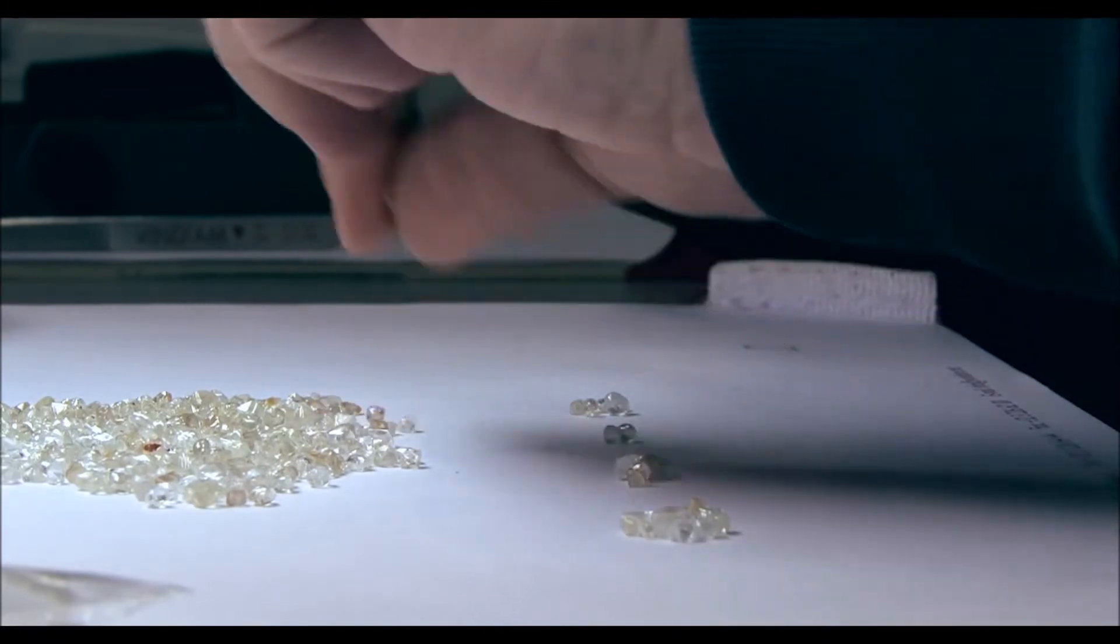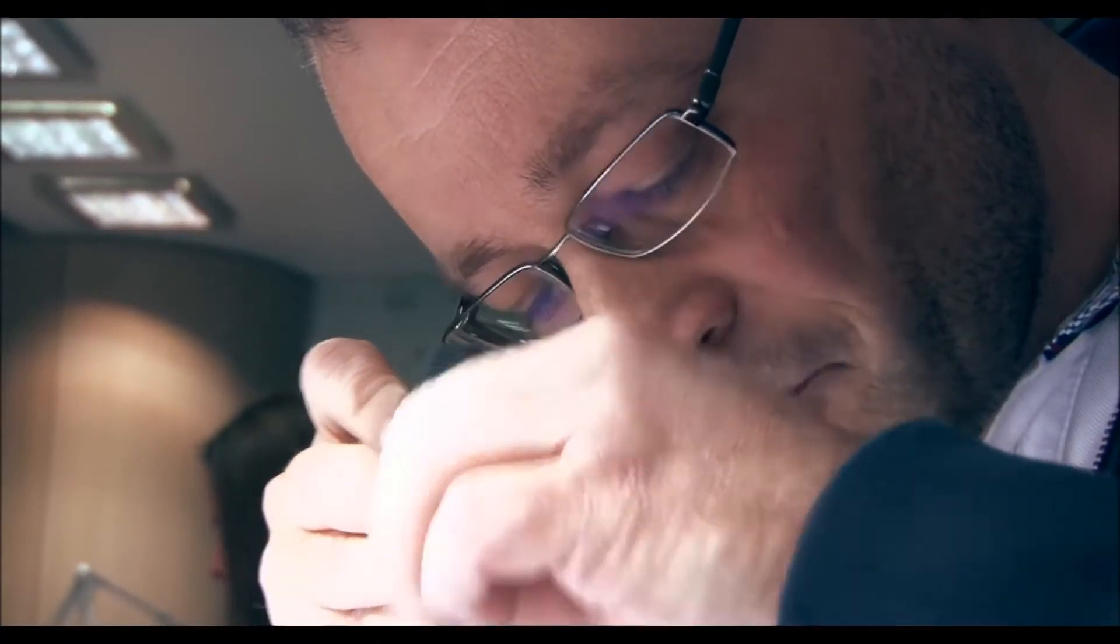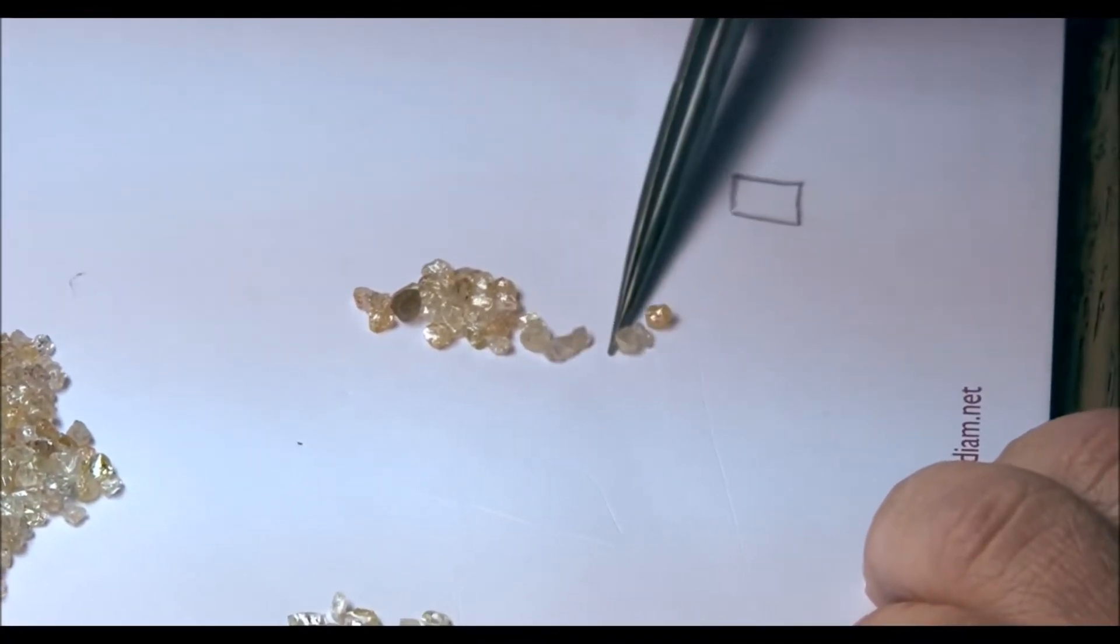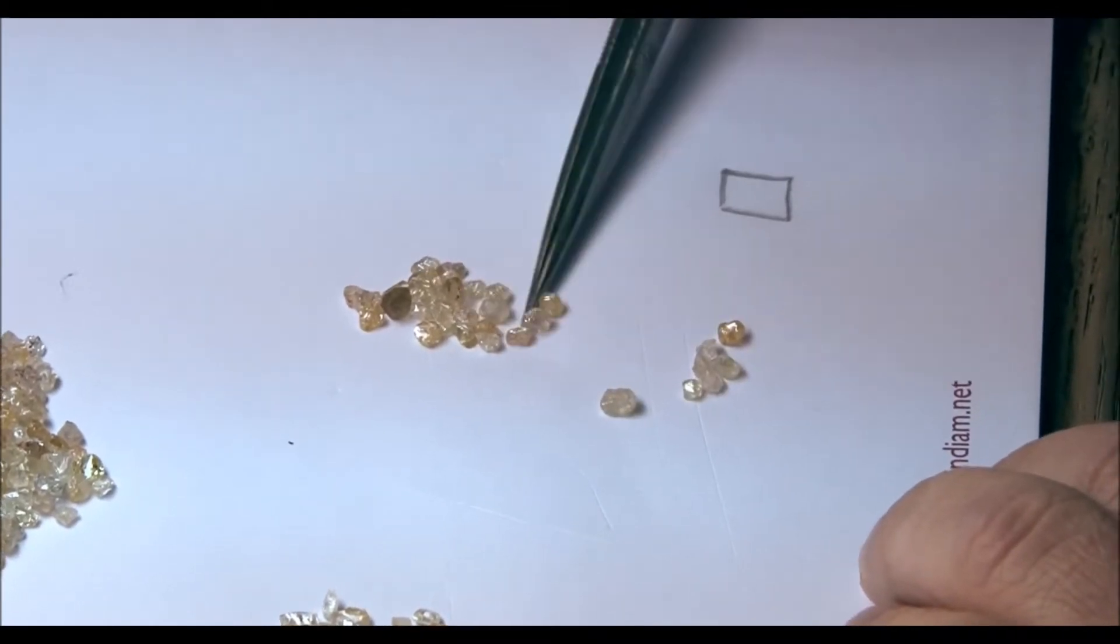For shape, the diamond sorters are not looking for stones to be either round brilliant or princess cut, but instead looking for makeable stones or sawable stones. A makeable stone is the name given to diamonds whose shape lends itself to having one large diamond cut from it.